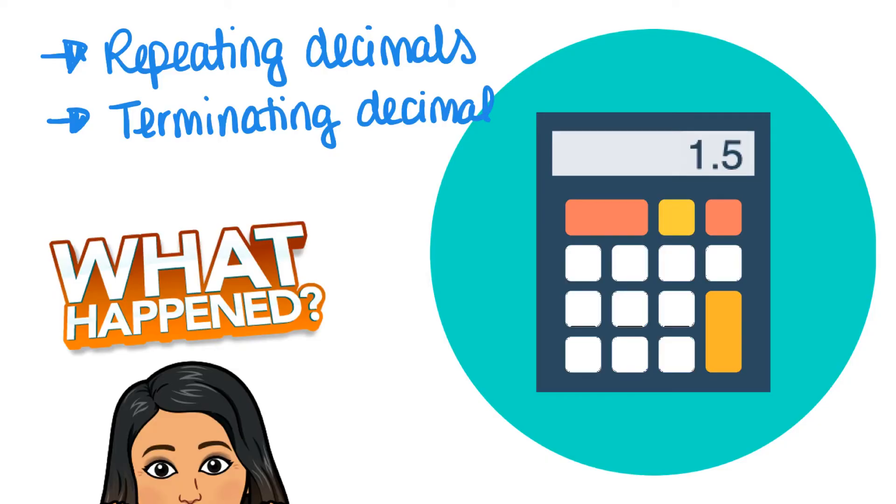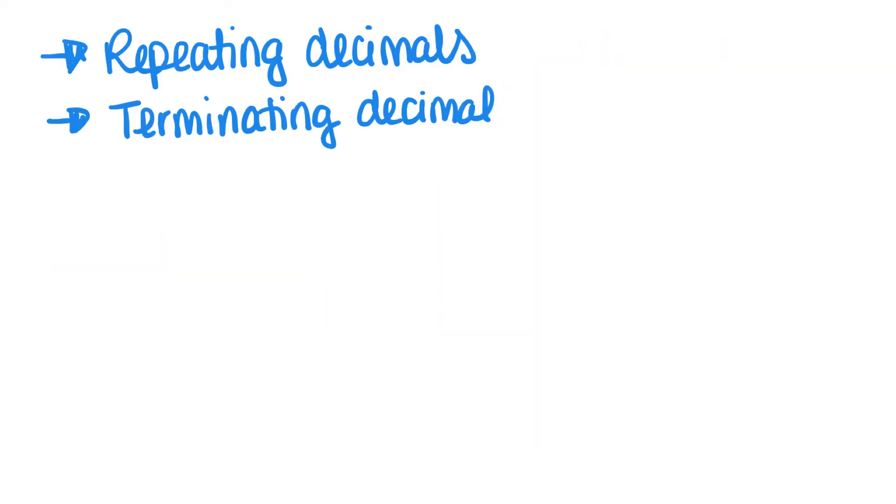But as you know, sometimes the decimal does end like this one, and this is called a terminating decimal because it terminates, which is just another word for ends. So sometimes fractions can be written as decimals that are repeating decimals, and sometimes they are terminating decimals.